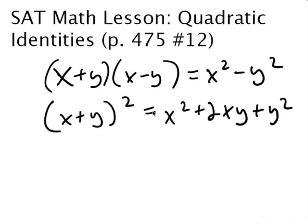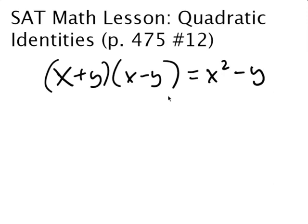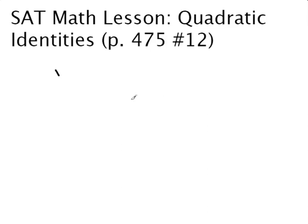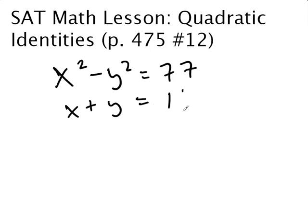So what I'm going to do is give you a problem from the book that perfectly illustrates this. This is from the Official Guide to the SAT, and it's number 12 on page 475. Here's the question: If x squared minus y squared equals 77 and x plus y equals 11, what is the value of x?